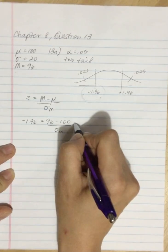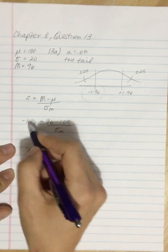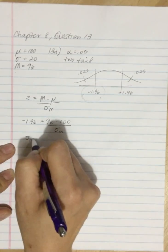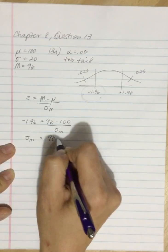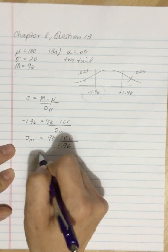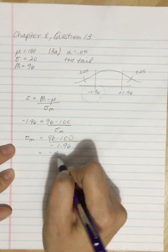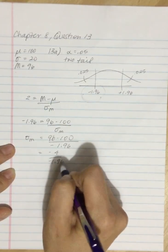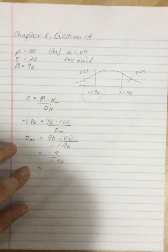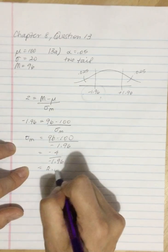So if we multiply both sides by the standard error and divide both sides by negative 1.96, what we get is 96 subtract 100 divided by negative 1.96. So we have negative 4 divided by negative 1.96, and that gives us 2.04.